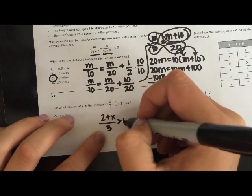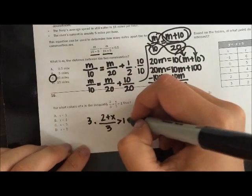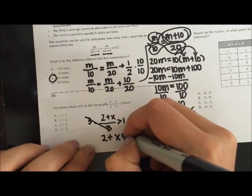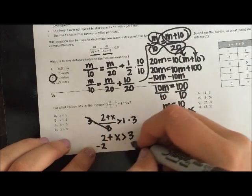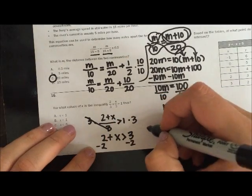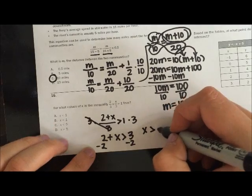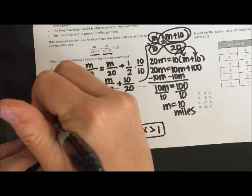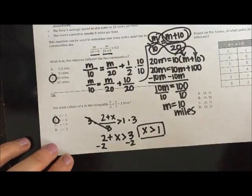In order to move this 3 out of the way, I'm going to multiply both sides by 3. So 2 plus x is greater than positive 3. And then I'm going to subtract that 2. So I'm going to get x is greater than, well, 3 minus 2 is 1. Watch your signs.